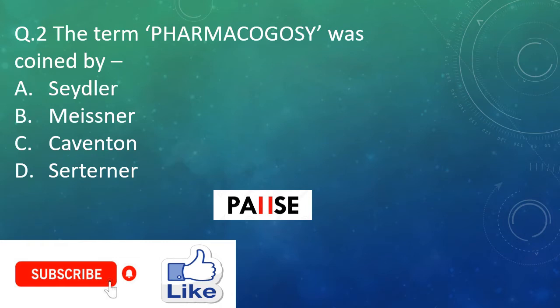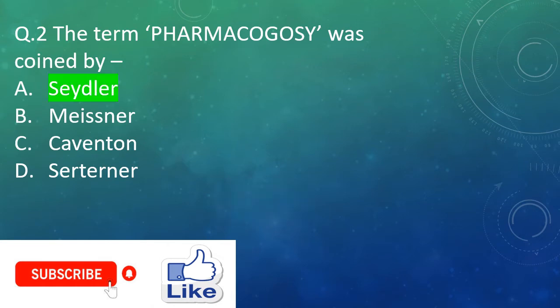Question two: The term pharmacognosy was coined by? Option A: Seydler. Option B: Masoner. Option C: Captain. Option D: Sutterler. And the right answer is Option A: Seydler.